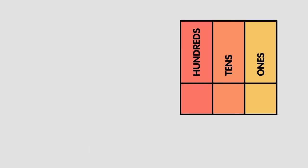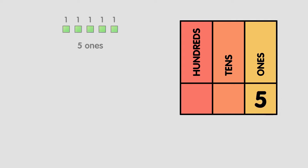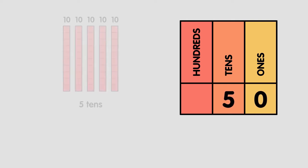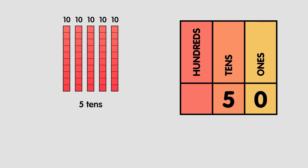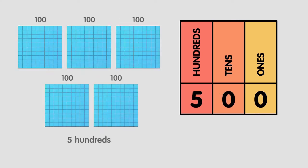For example, the number five in the ones place has a value of five. But if we move the five to the tens place, we now have five tens, or the number 50. And if we move that five one more time to the hundreds place, we now have five hundreds, or 500.